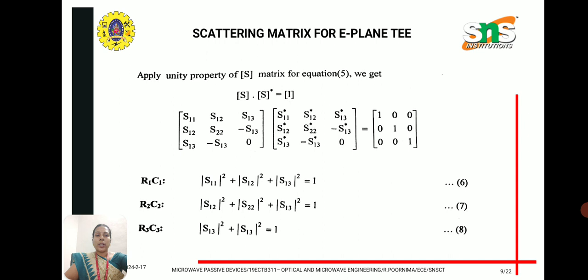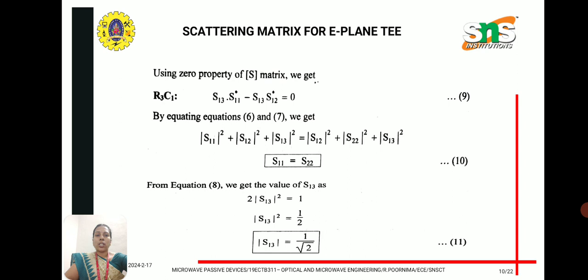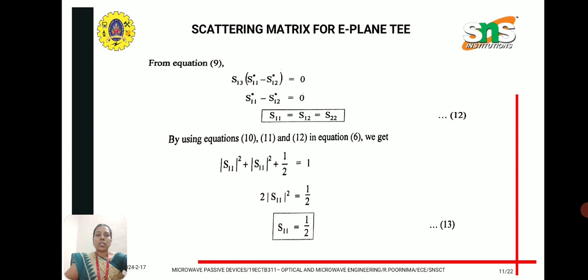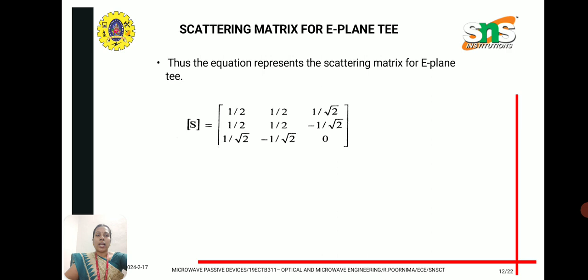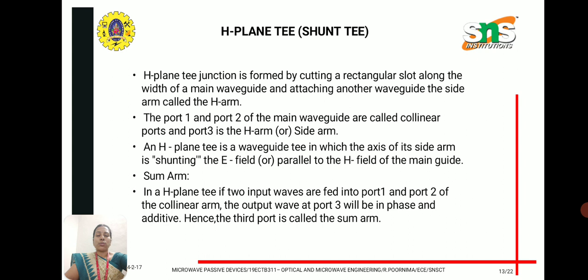By solving the equations using row 1 column 1, row 2 column 2, and row 3 column 3 of the S-matrix, we derive the S-parameters. We find S11 equals S22, and solving equation 8 gives S13 equal to 1 over root 2. Substituting this value, we get S11 equal to S12 equal to S22 equal to 1/2. This is the final scattering matrix for the E-plane T junction.